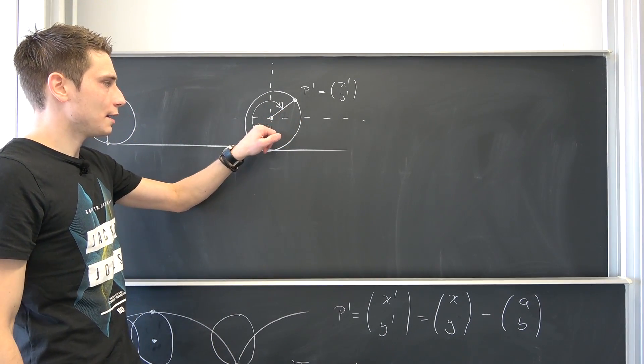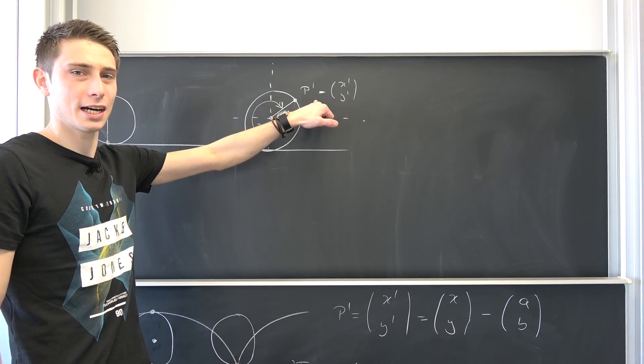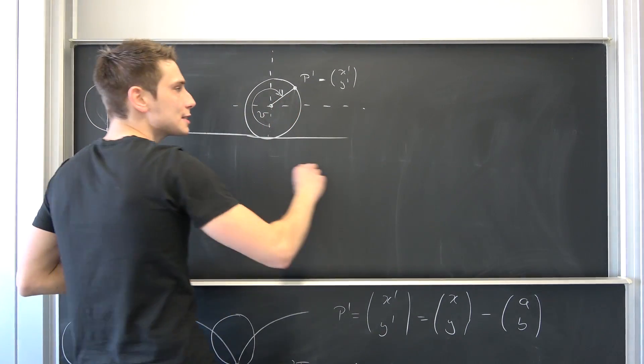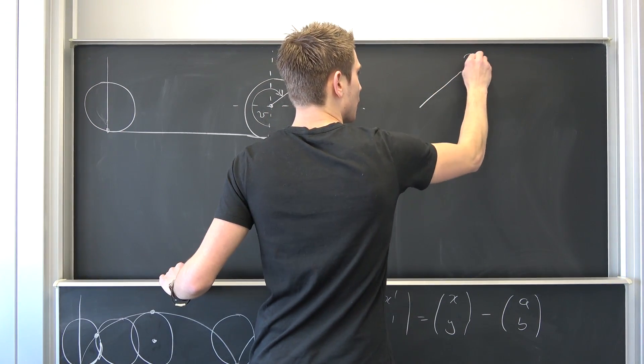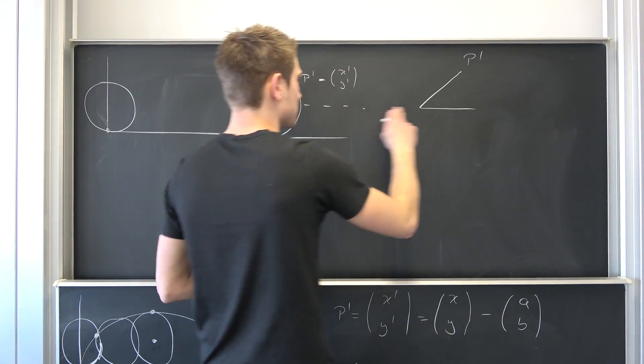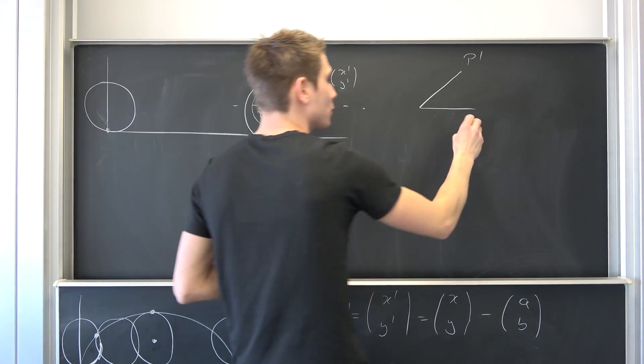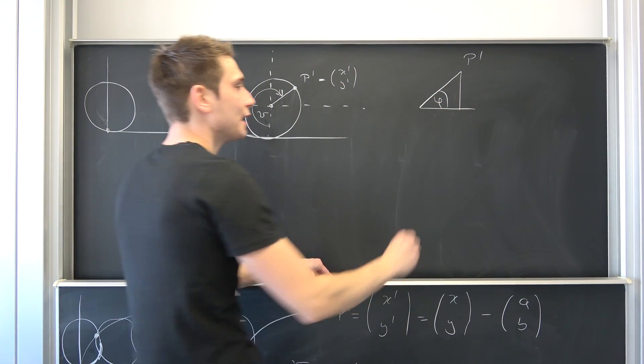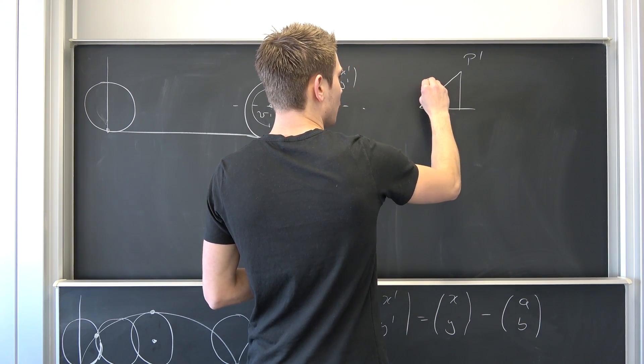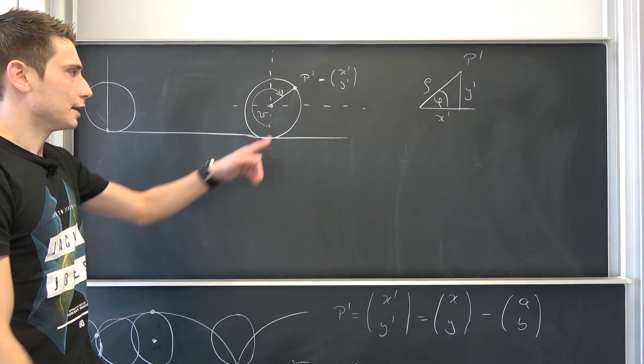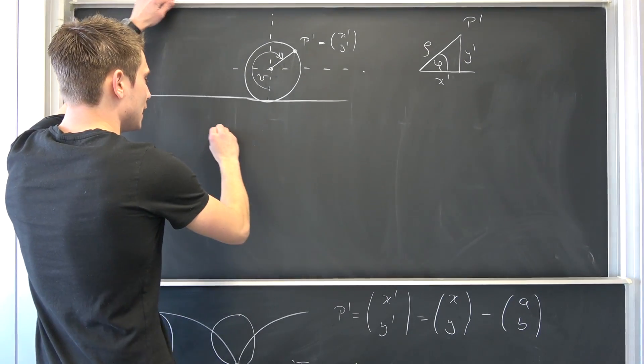How can we make sense of this theta? What is this theta all the time in this new coordinate system? Well, if we just say that this vector p right here, p', spans out a little triangle using this new x' axis that we have right here, then let's say this right here is phi. Okay, then we have this is our length rho. This is our x' coordinate. This is our y' coordinate. Then our angle theta that we have